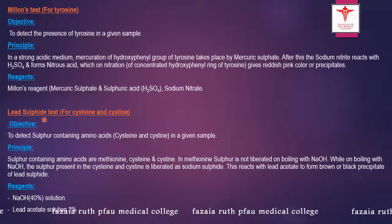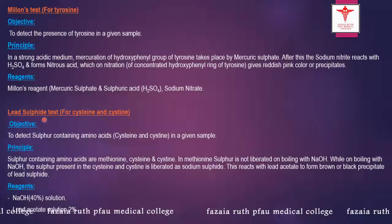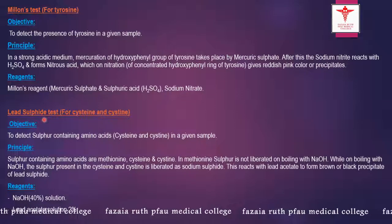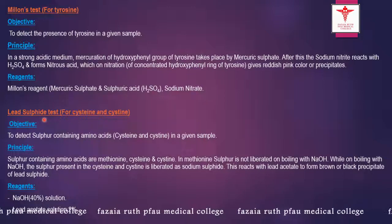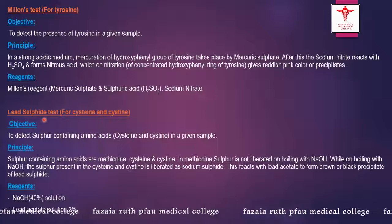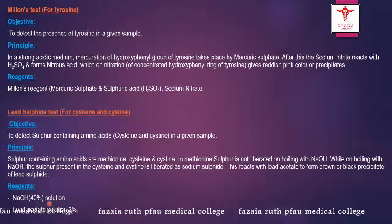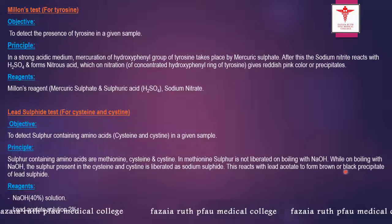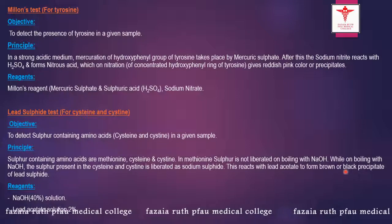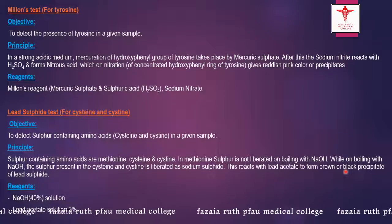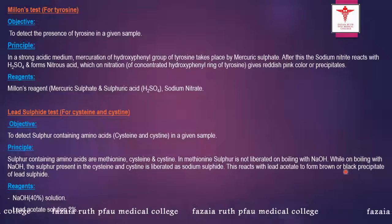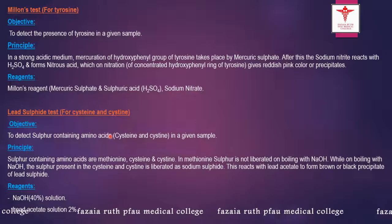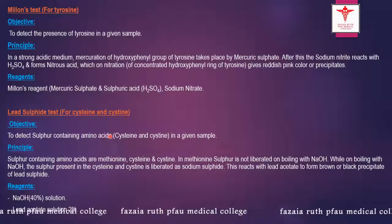For the lead sulfide test for cystine and cysteine — sulfur-containing amino acids — we use lead acetate solution and 40% sodium hydroxide solution. In the end we get a brown or black precipitate, confirming the presence of sulfur-containing amino acids cystine and cysteine.